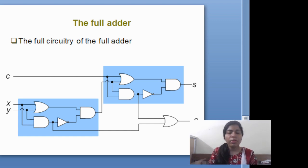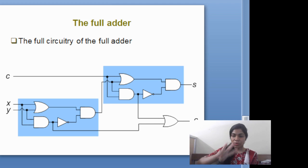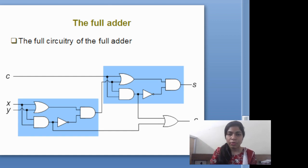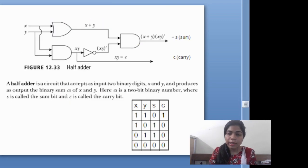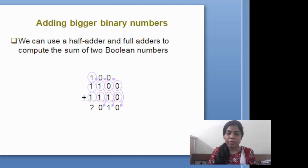Why are we using two? What are the differences between half adder and full adder? In a half adder, we will use only two inputs, and in a full adder, we will use three inputs. At the output, we will get only sum and carry in both, but the number of inputs will be different. In a full adder, there are three inputs: X, Y, and C. And in a half adder, there are only two inputs: X and Y. This is the difference between full adder and half adder.